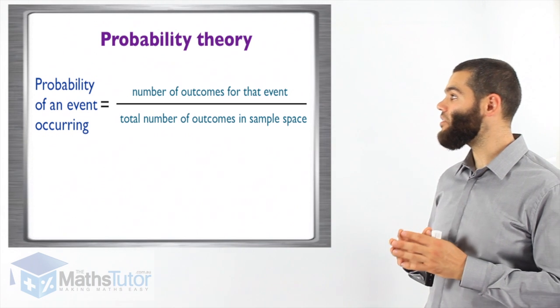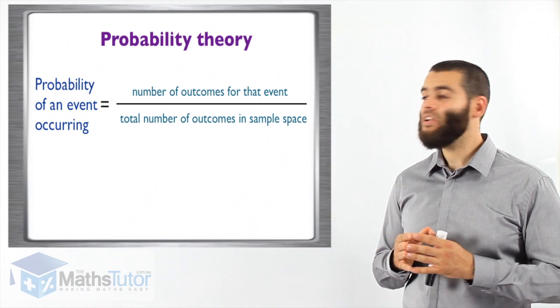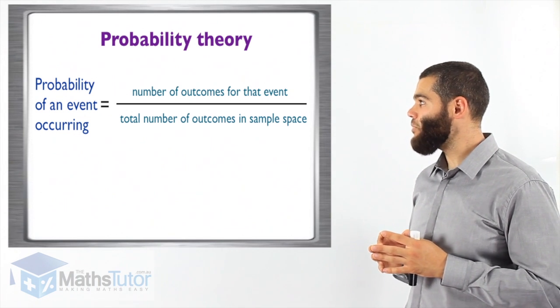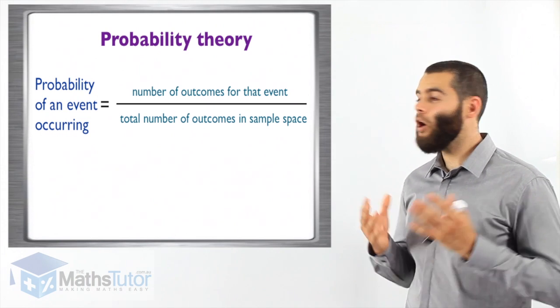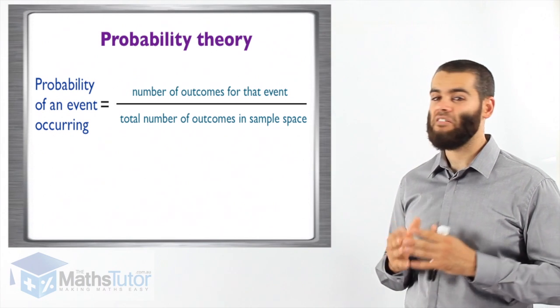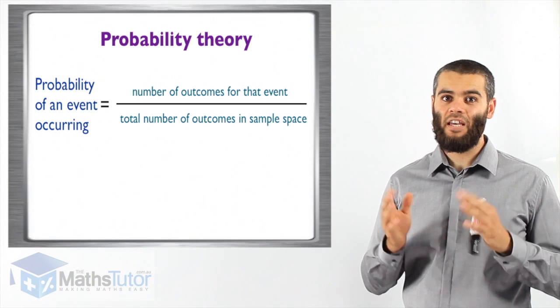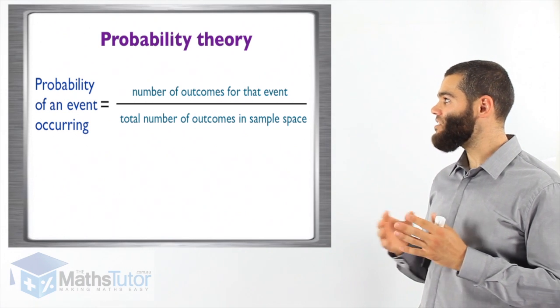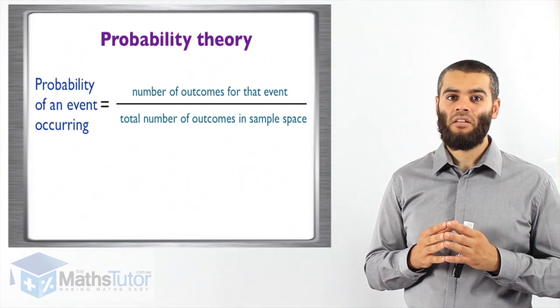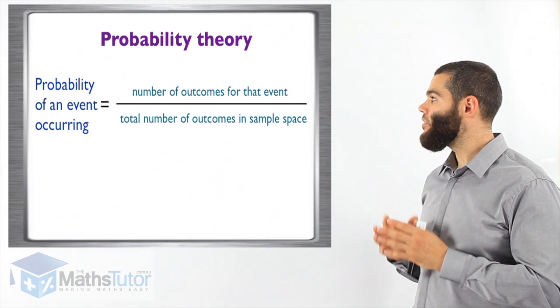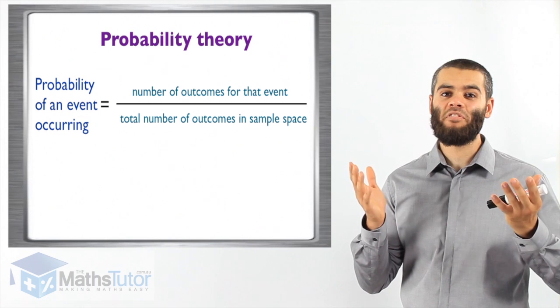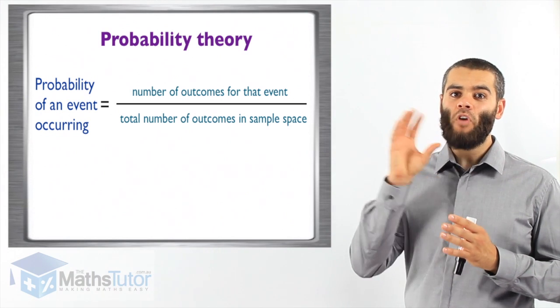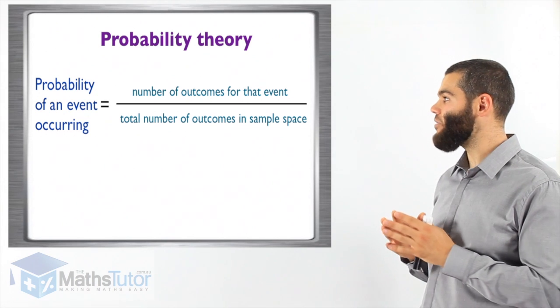So looking at this theory it says the probability of an event occurring equals the number of outcomes for that event over the total number of outcomes in the sample space. Now that's a lot of words. It can be technical. With a bit of examples you are going to see how easy it is. All it's saying is that the number of outcomes in that event is divided by the number of outcomes in the sample space. What is sample space? Meaning the total events that are there. And the outcomes that we are looking for over the total, that is the probability of that event happening.